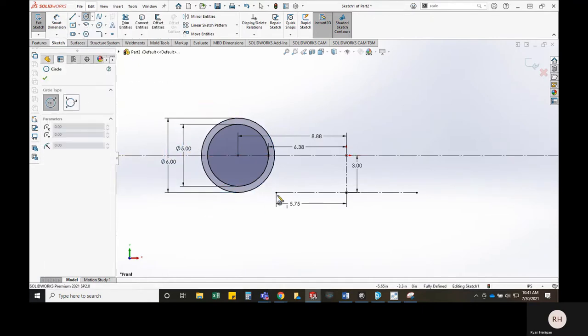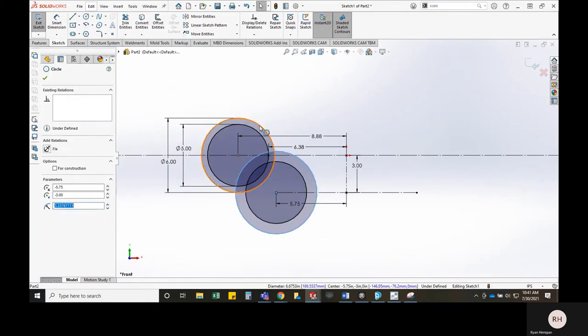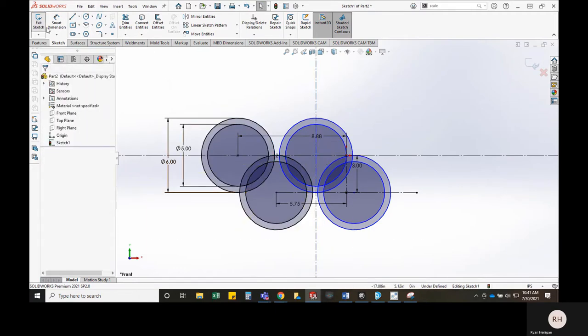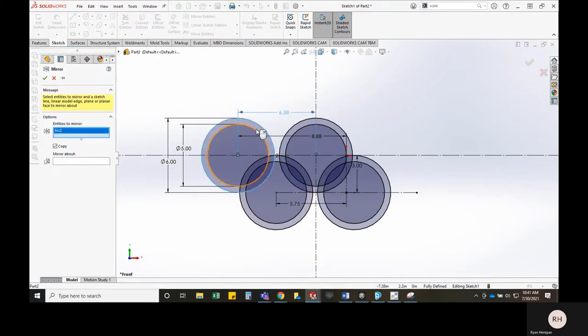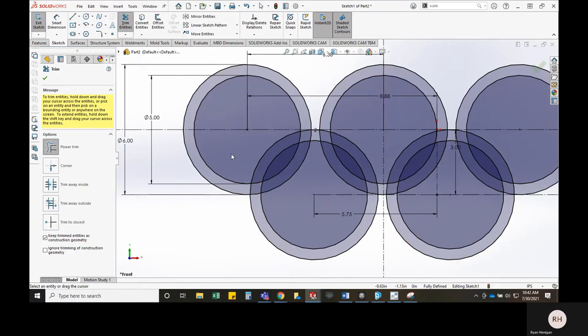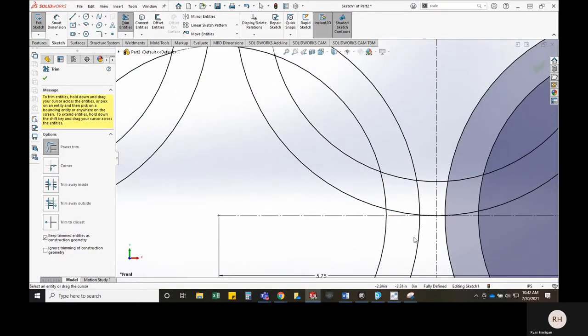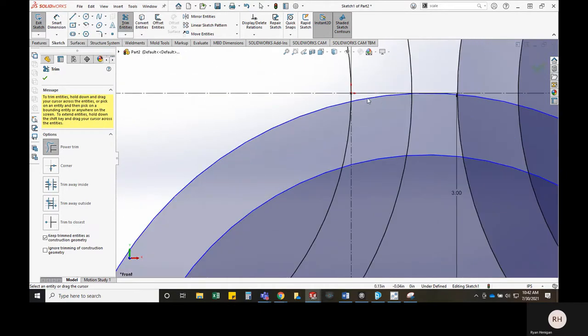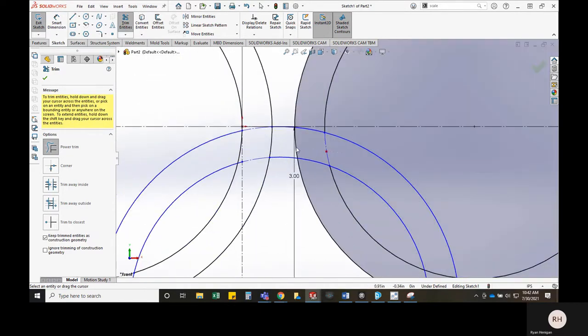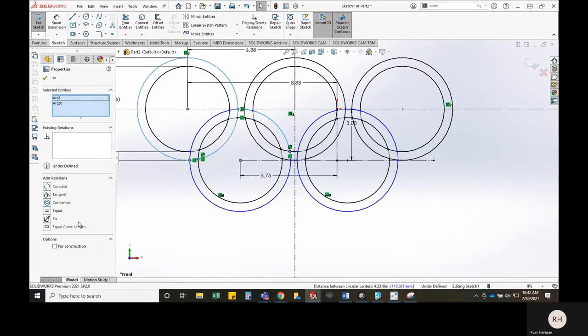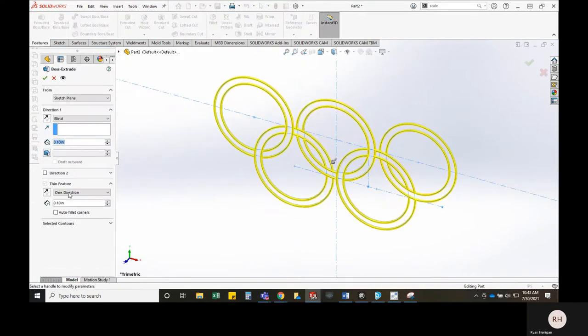Once he saves it out as a SolidWorks file, we're going to bring that native CAD data into GrabCAD. GrabCAD allows you to bring in native CAD data, you don't have to have a specific file type for it. Let's take a look at how Ryan's doing this. As you can see, he's very quick.